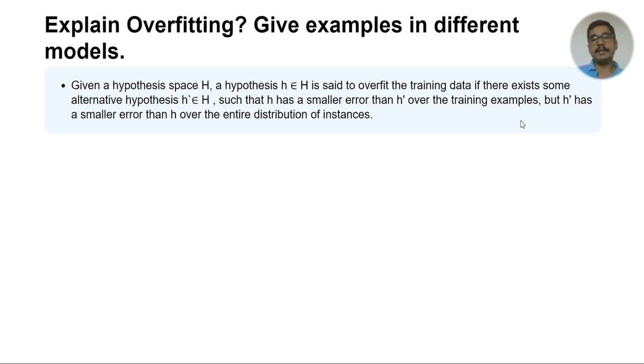This is a very well formulated, formal answer for overfitting. What this means basically is that you can consider any hypothesis as your machine learning model. You take one hypothesis, which may be a simpler or complex model, then take another model from that hypothesis space and compare these two. If the previously taken model has lower error than the alternative, but the alternative has the overall generalization error reduced for the entire distribution of instances, then that is overfitting.